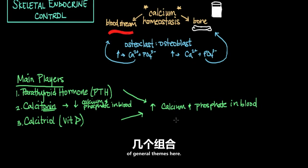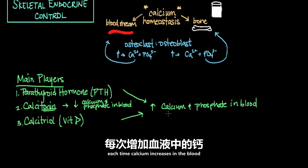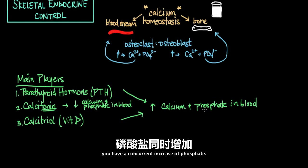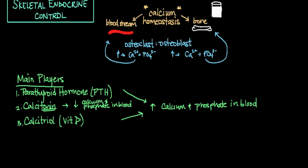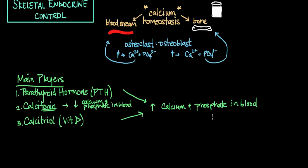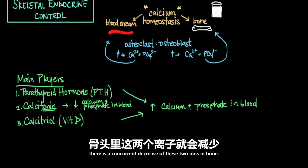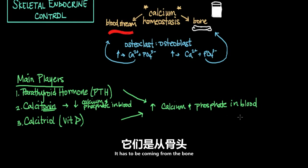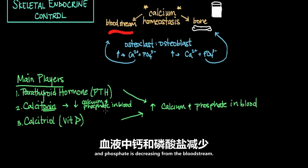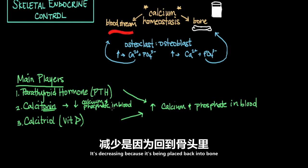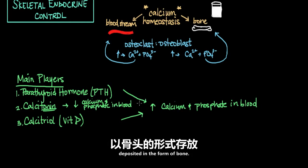A helpful way to remember this is that calcitonin actually 'tones down' the calcium in the blood. There are a couple of general themes here: first, each time calcium increases in the blood, there is a concurrent increase of phosphate — they go together. And as calcium or phosphate increases in the blood, there is a concurrent decrease of these ions in bone, because they have to be coming from the bone. The opposite is true when calcium and phosphate decrease in the bloodstream — they are being deposited back into bone.